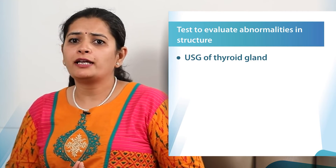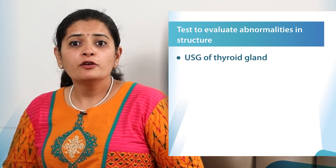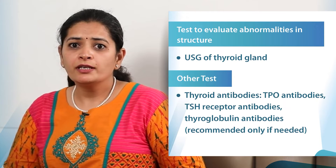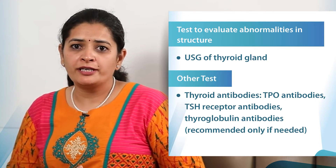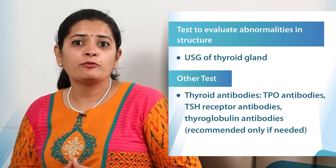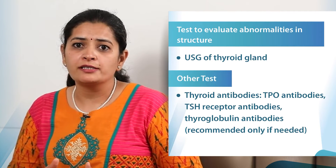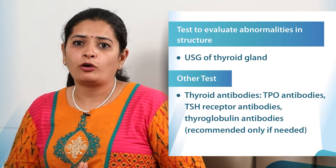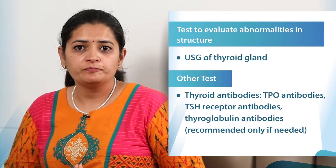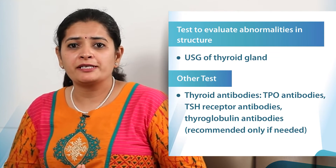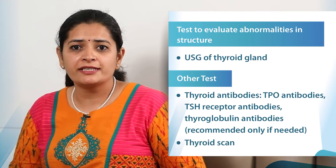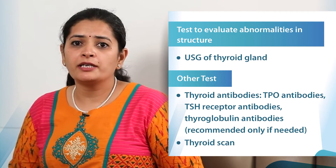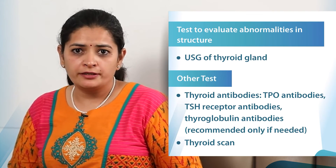In some borderline cases of hypo- or hyperthyroidism, we might need to do specialized blood tests called thyroid antibodies — these can be TPO antibodies, TSH receptor antibodies, and thyroglobulin antibodies. These are not tests for everyone; they may be costly and will be recommended by your doctor only if needed. There is also a last but very specialized test called a thyroid scan — a thyroid nuclear medicine scan — done in some cases of hyperthyroidism to guide further treatment.